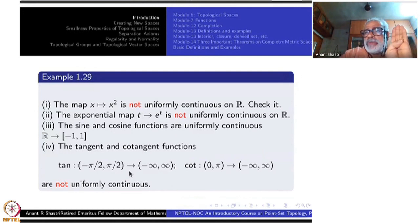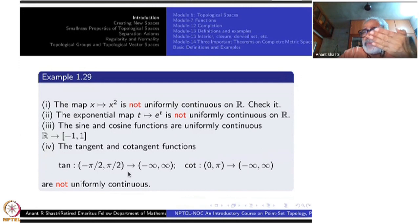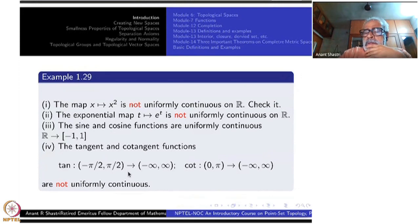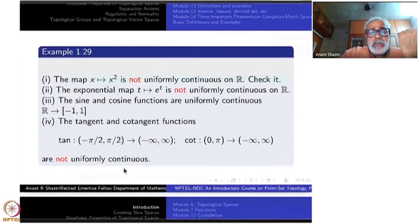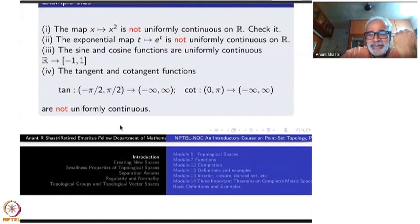Uniform continuity is not a topological property at all — in general topology there is no concept of uniform continuity. To introduce it you need something like a metric space, or more generally what are called uniform spaces, which can support uniformly continuous functions.